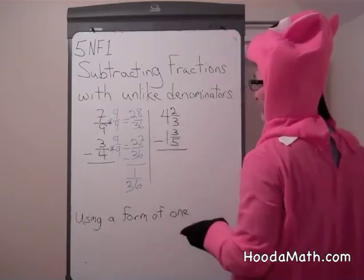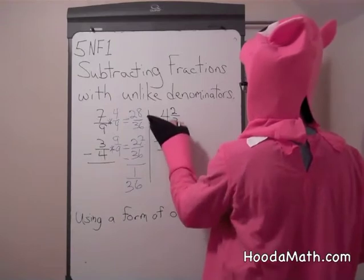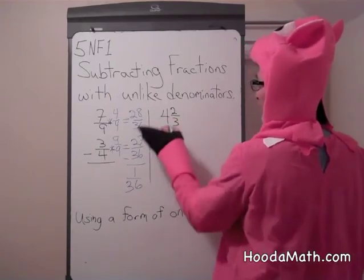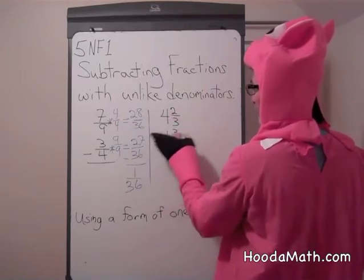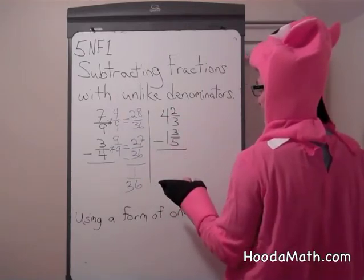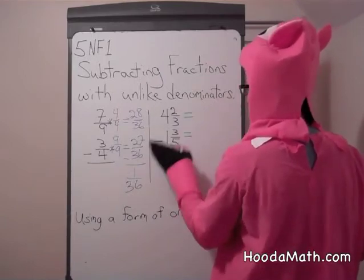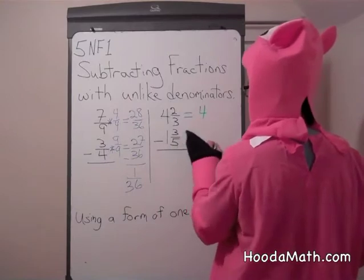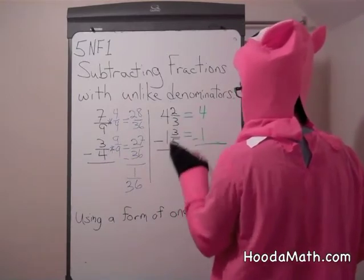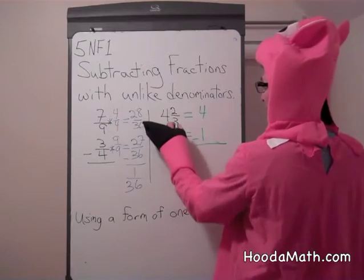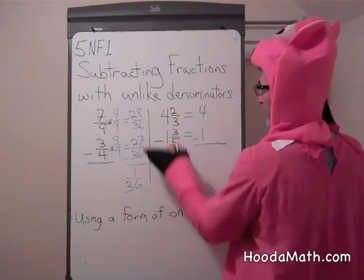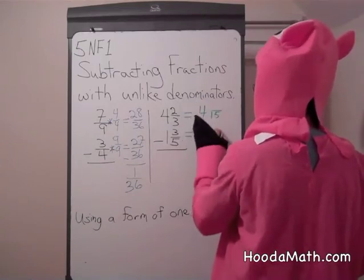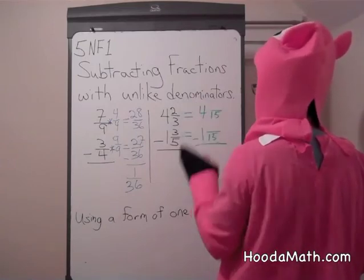Number two. The denominator is 3 and the other denominator is 5. These are mixed numbers: 4 and 2/3 minus 1 and 3/5. The first thing we do is move the whole numbers over. 4 take away 1. We multiply the denominators, 3 and 5. 3 times 5 is 15, so our common denominator is 15.